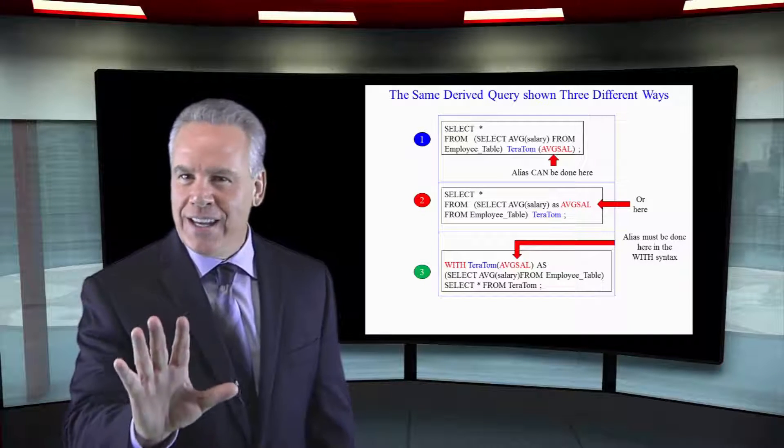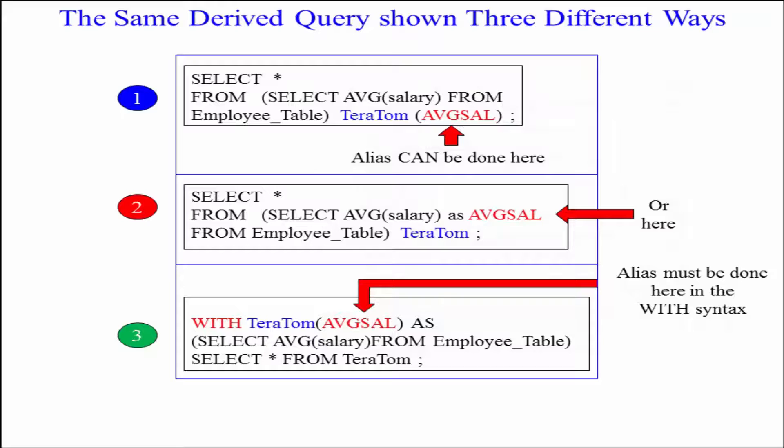We're doing the second query the same exact way. We're saying select everything from timeout, select the average salary as AVGSAL. Then after we call time in, we say as Teratom. You always name the table anytime you create a derived table.